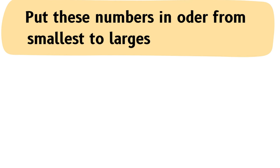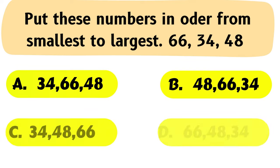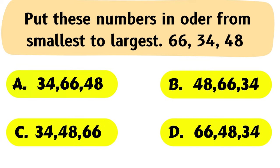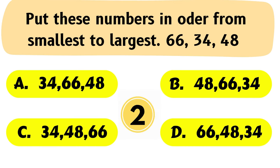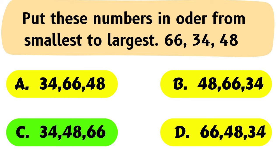Question No. 40: Put these numbers in order from smallest to largest: 66, 34, 48. The correct answer is Option C: 34, 48, 66.